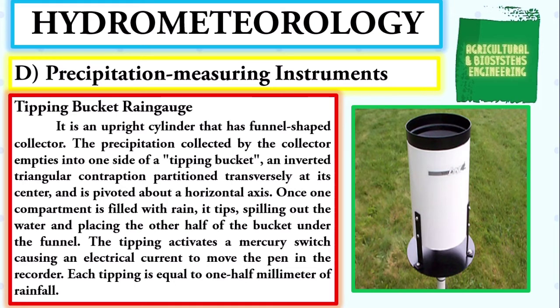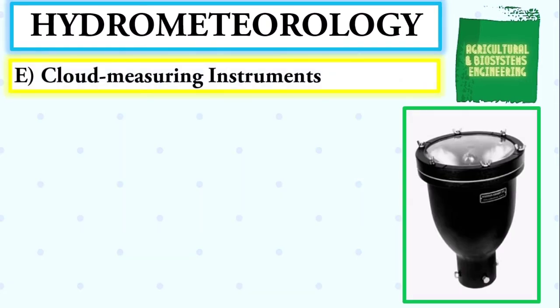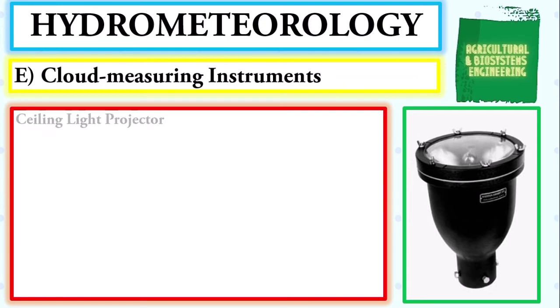Next, the tipping bucket rain gauge — an upright cylinder with a funnel-shaped collector. Precipitation empties into one side of a tipping bucket, an inverted triangular contraption partitioned transversely at its center and pivoted about a horizontal axis. Once one compartment is filled with rain, it tips, spilling the water and placing the other half under the funnel. The tipping activates a mercury switch causing an electrical current to move a pen in the recorder. Each tipping equals one-half millimeter of rainfall.